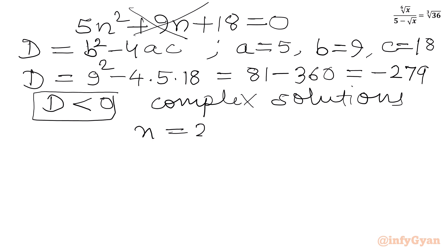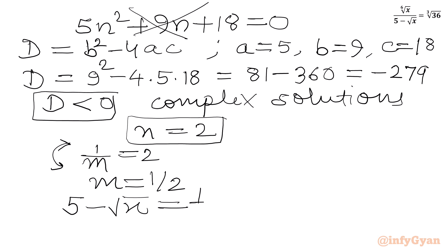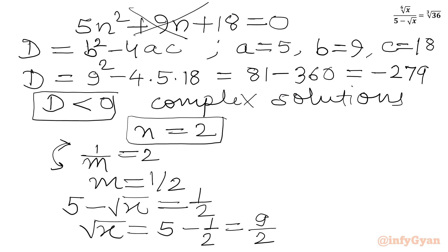Since n = 1/m, we have 1/m = 2, so m = 1/2. Since m = 5 minus square root x, we get 5 minus square root x = 1/2, so square root x = 5 − 1/2 = 9/2. Squaring both sides gives our final answer x = 81/4.